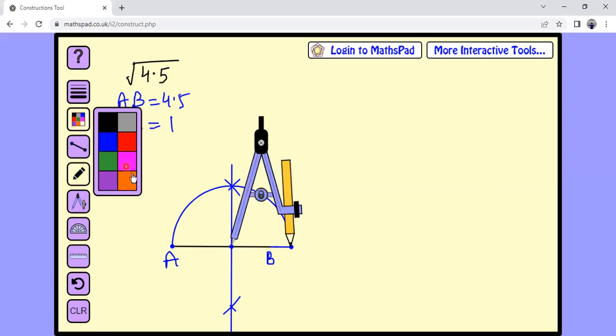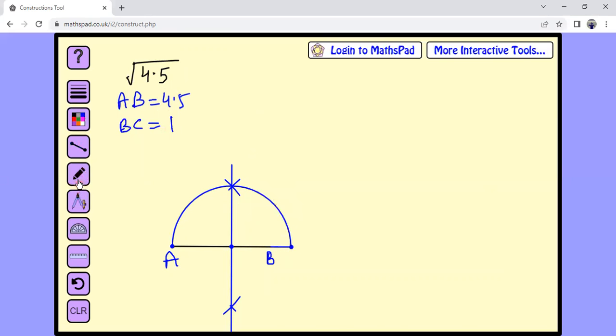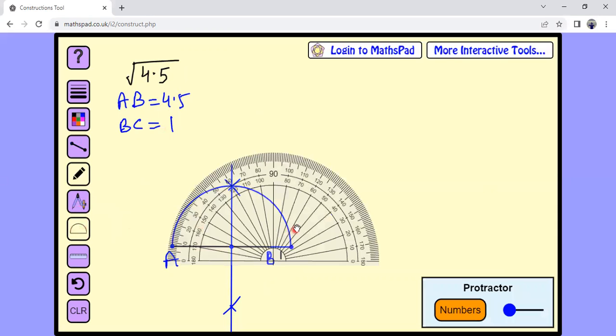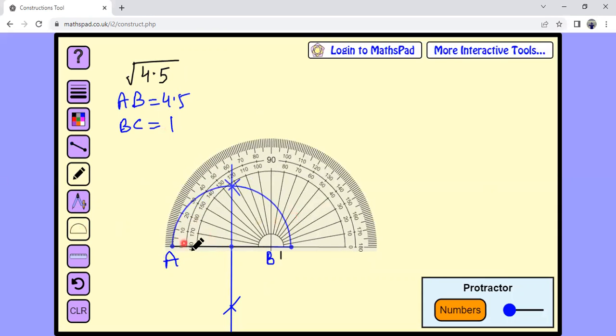So from there to C, this much is 1, and then at B we are going to draw a 90 degree angle. Is it easy to draw the 90 degree angle with the help of protractor? Yes. Simply take a point over up here.